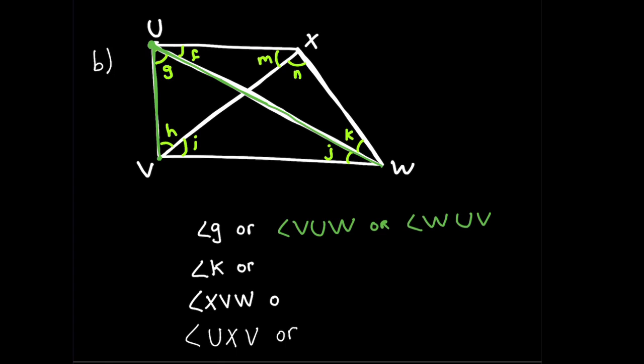Now we're going to angle K. Angle K is right here. I'm going to show it with blue. Then go over the lines, one here and one over there. That's how this angle was created, right? So the vertex is W. Another way we can call angle K is UWX, or XWU.